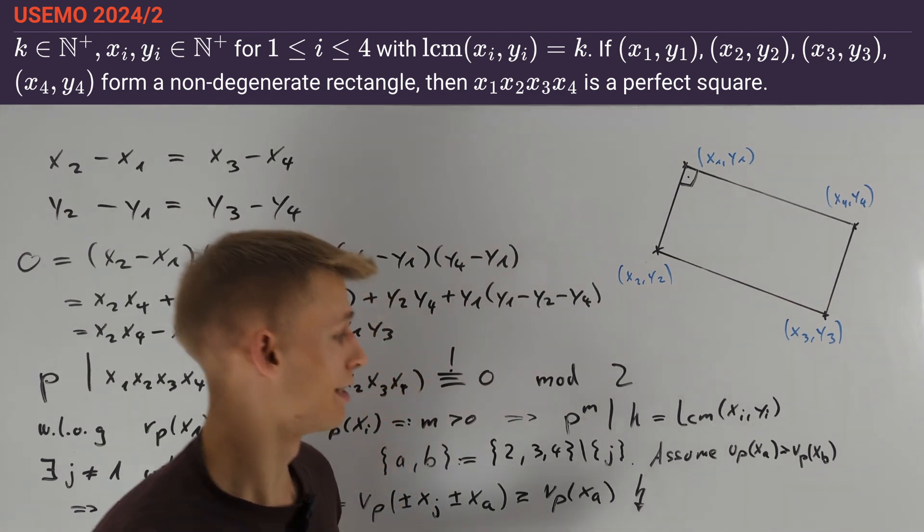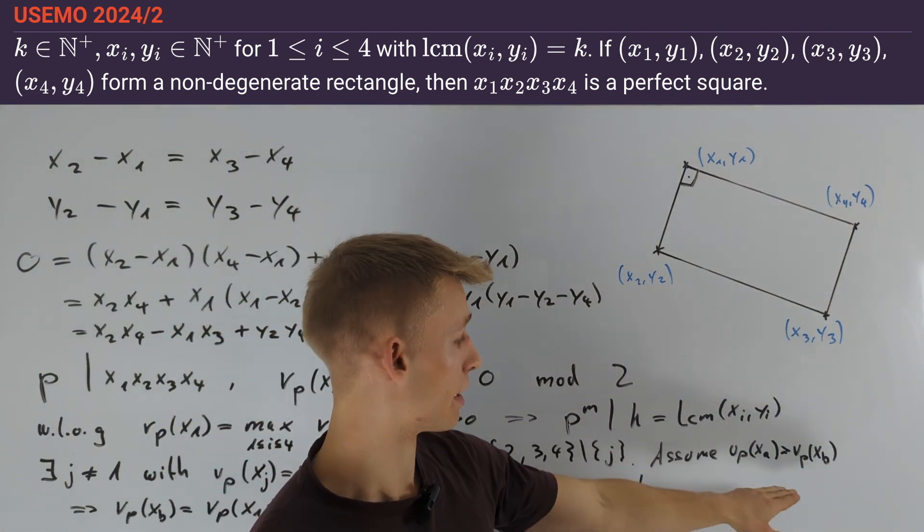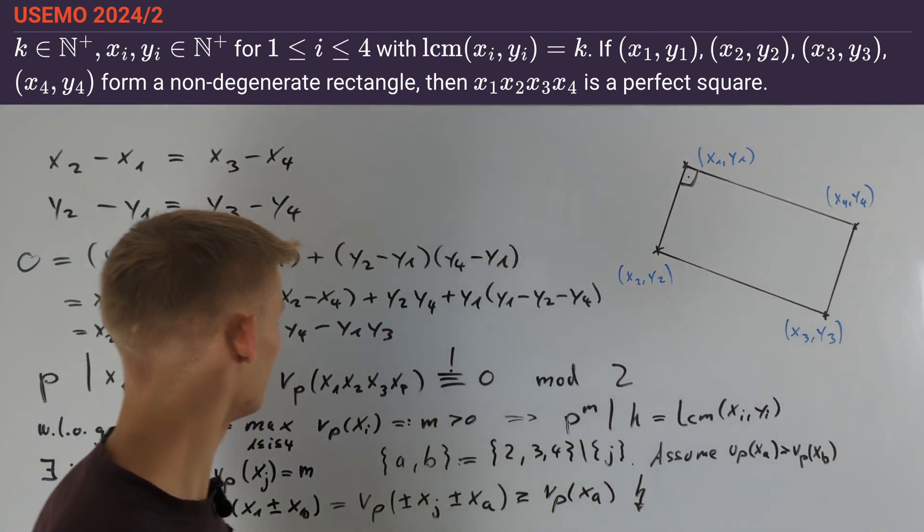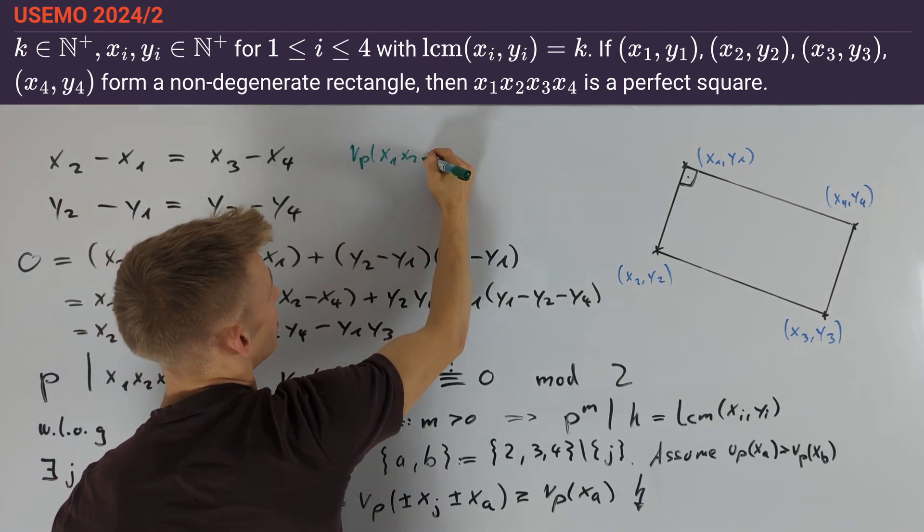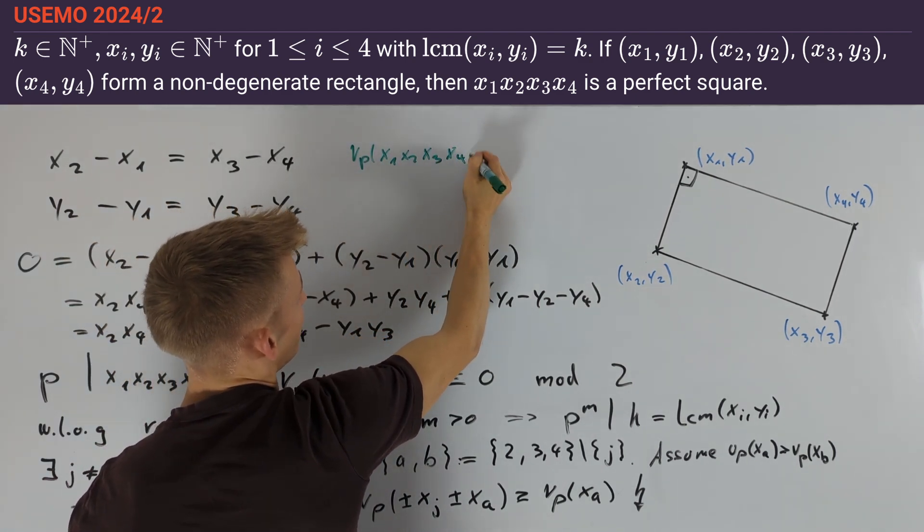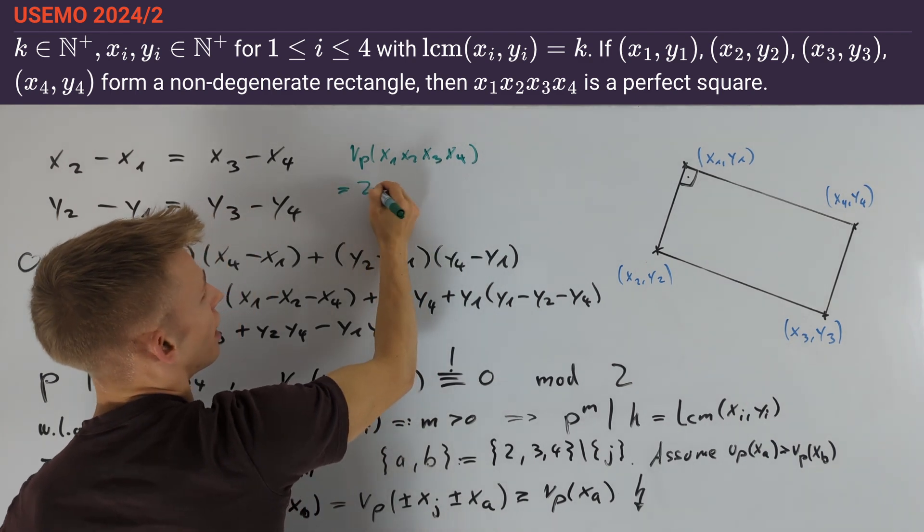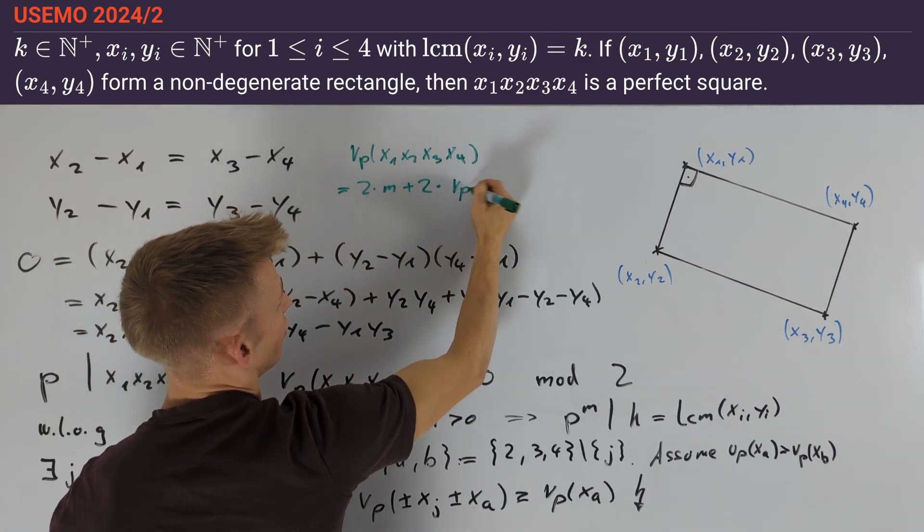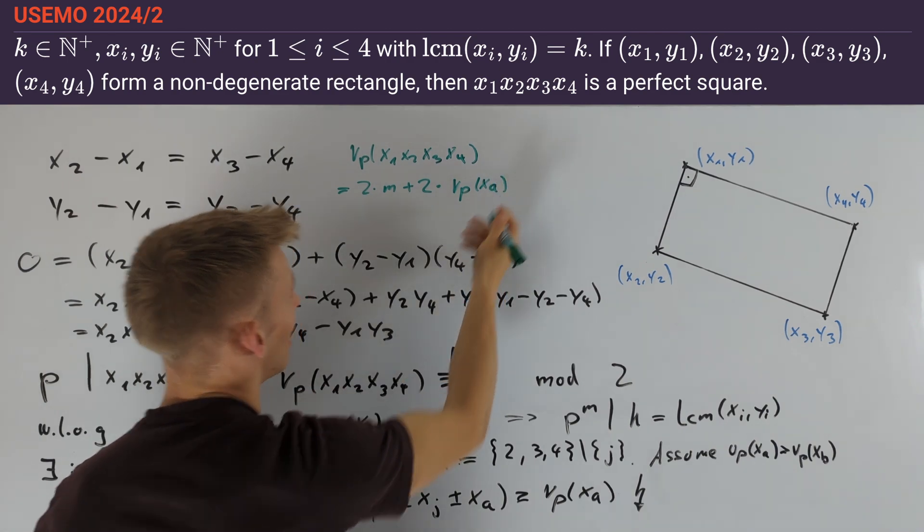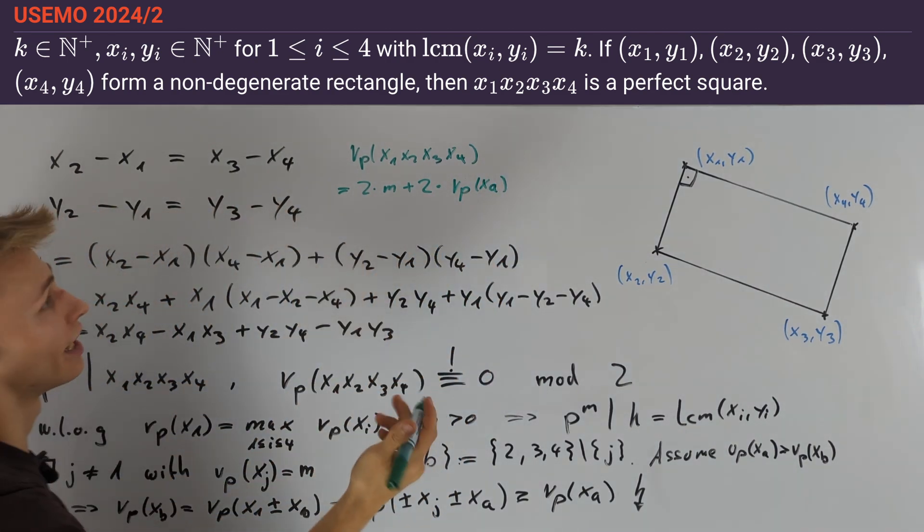We conclude that nu_p(xa) must equal nu_p(xb), and this allows us to rewrite nu_p(x1x2x3x4) as 2m + 2·nu_p(xa), and this is indeed an even number. Therefore we are done.